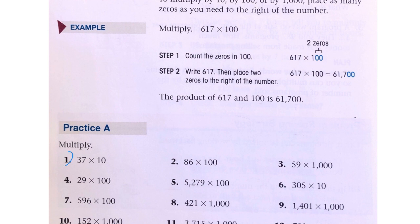So here we have number 1, 37 times 10. 10 has one zero, so we're going to write 37 and add one zero.